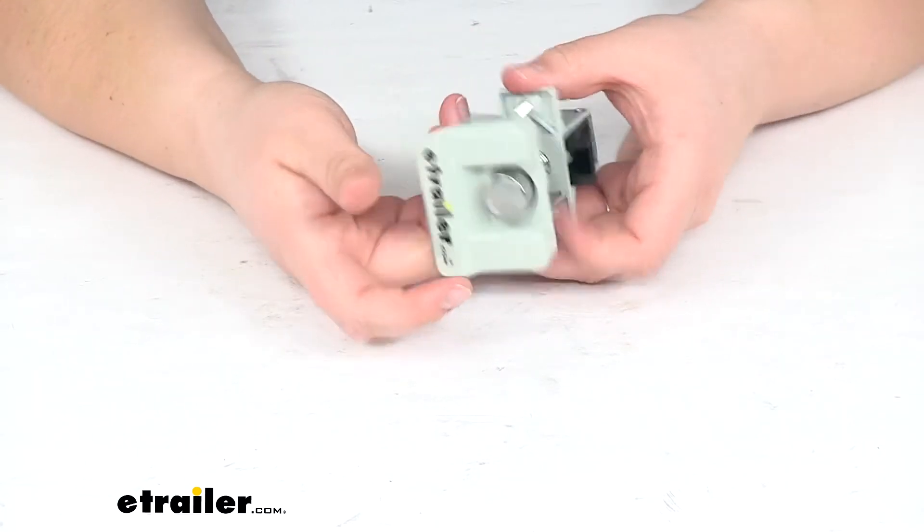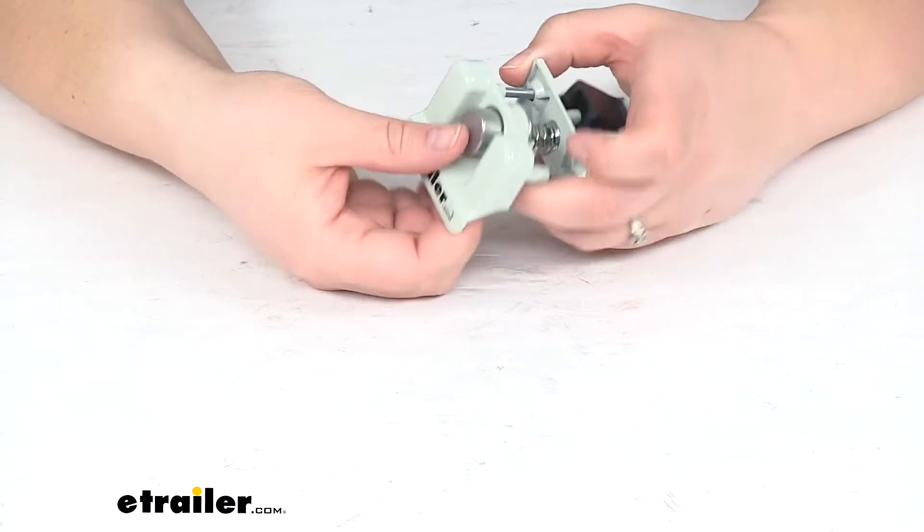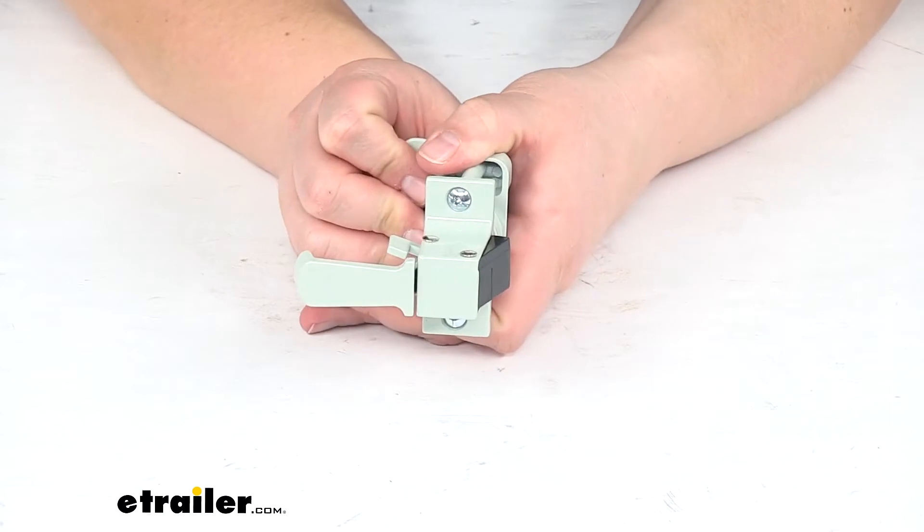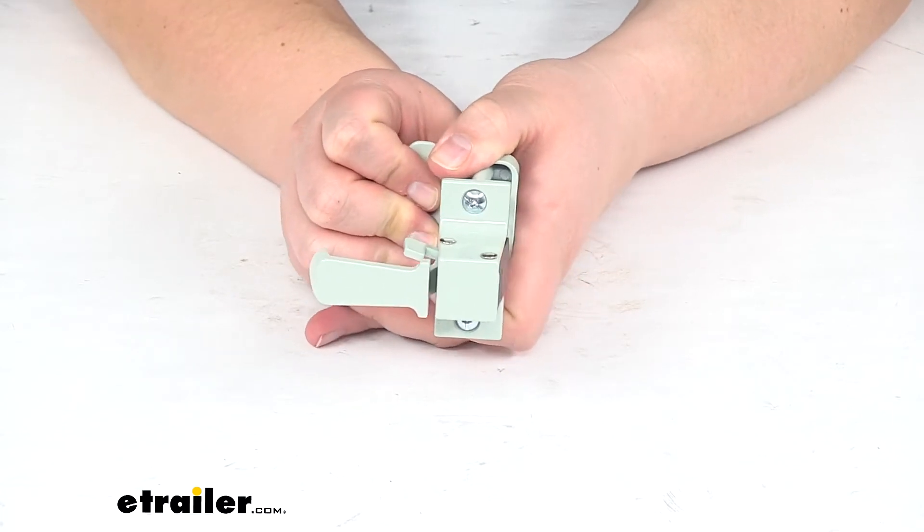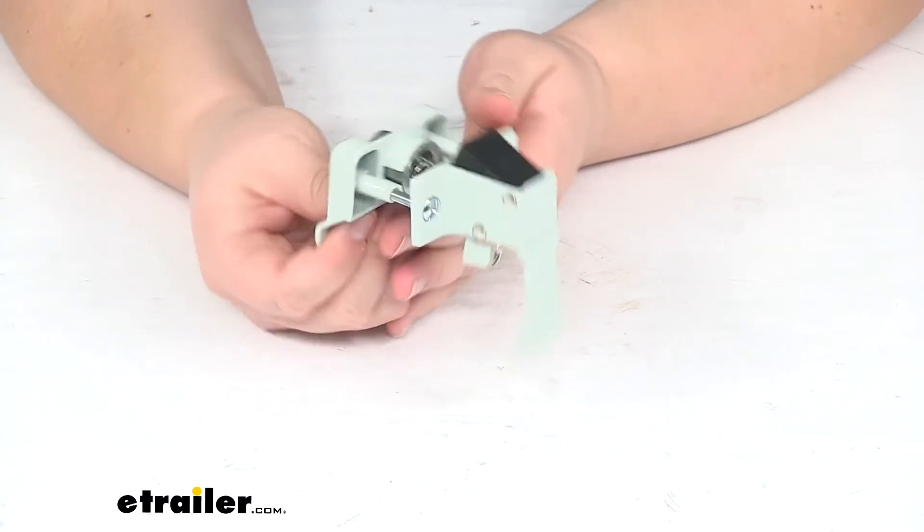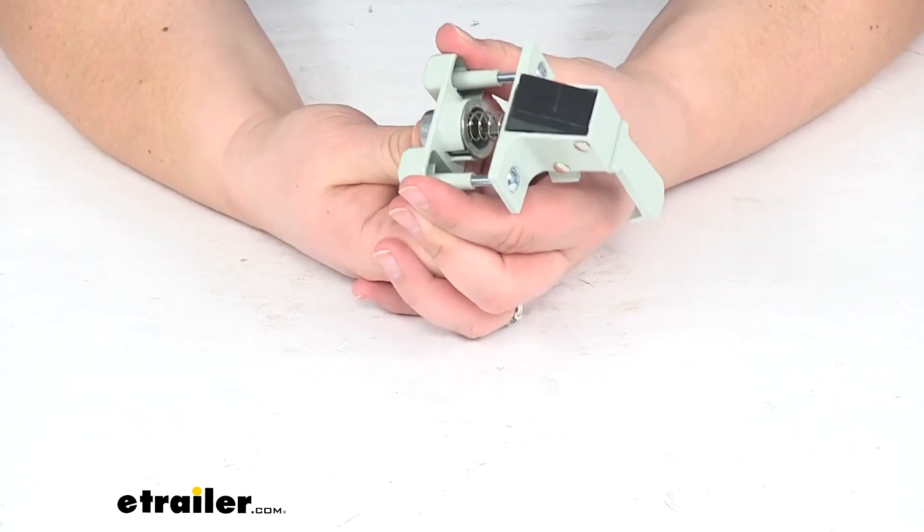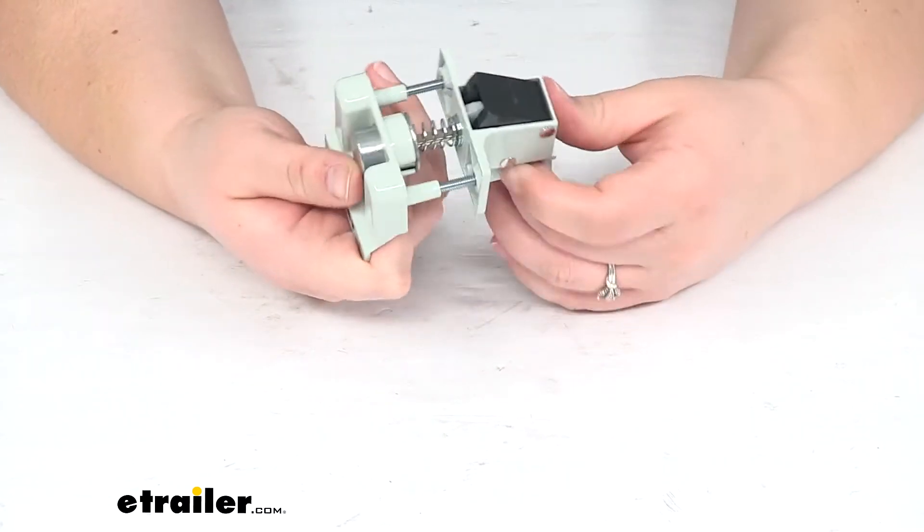And basically from the outside we'll have this little push button and then our handle so we can easily push that and open our screen door. It's going to turn that little rod inside there and deploy that mechanism so we can open it up.